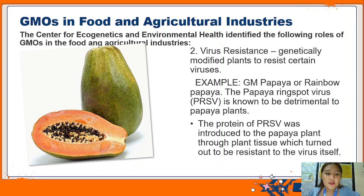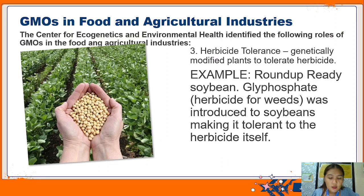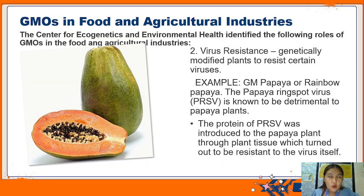Number two role is virus resistance: genetically modified plants to resist certain viruses. An example is the GM papaya or rainbow papaya. The papaya ring spot virus or PRSV is known to be detrimental to papaya plants. The protein of PRSV was introduced to the papaya plant through plant tissue, which turned out to make it resistant to the virus itself - an effect similar to vaccines against measles or influenza virus. The genetically modified papayas show no ring spots.